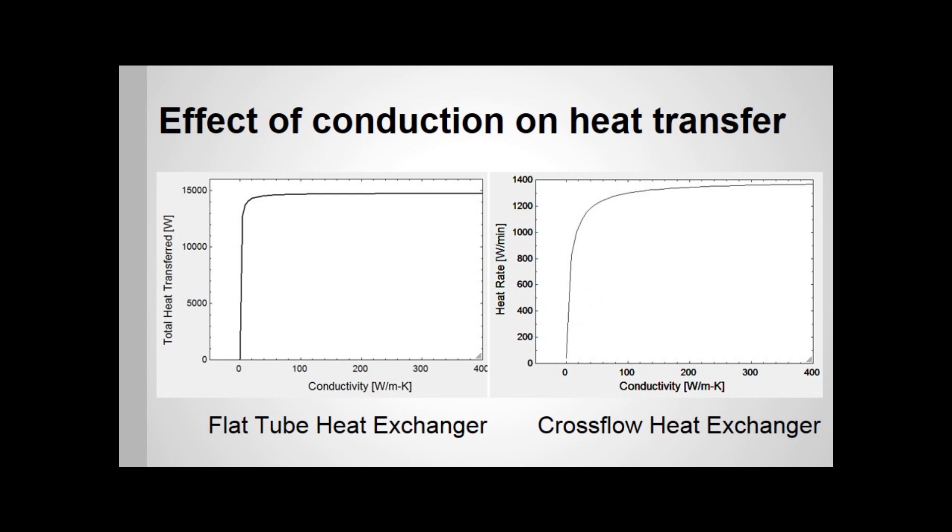As you can see in these plots for both flat tube and cross flow heat exchangers, there is a large jump in heat transfer at any level of conductivity above zero, which makes the proportions reasonable to deal with. A composite polymer with a conductivity between 4 and 10 watts per meter Kelvin would be nearly as effective as metals with conductivity in the hundreds.